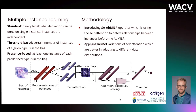In the case of MIL problems we assume that the bag has an assigned binary label. For the standard assumption, the bag is positive if at least one instance contains the features of a positive label.